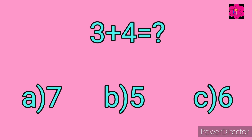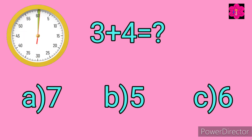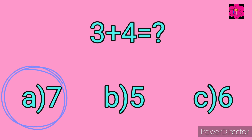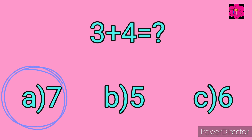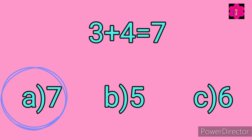Your time starts now. Correct answer is 7. 3 plus 4 is equal to 7.